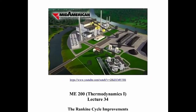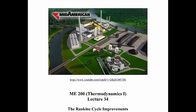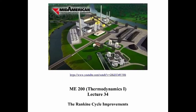Welcome to lecture 34. In this lecture, we're going to talk about Rankine cycle improvements. The picture we're starting with is of a coal-fired power plant — there's an interesting video you might want to look at by clicking the YouTube link. It covers where coal comes from, the boiler, various turbines used in power generation, the condenser, and how they handle exhaust gases. It's about seven minutes and discusses a Rankine cycle with reheat, one of today's topics.